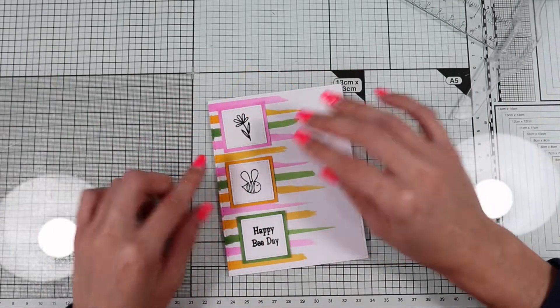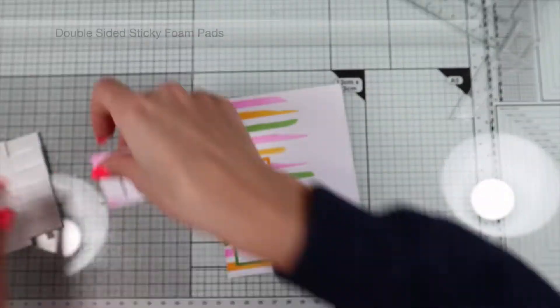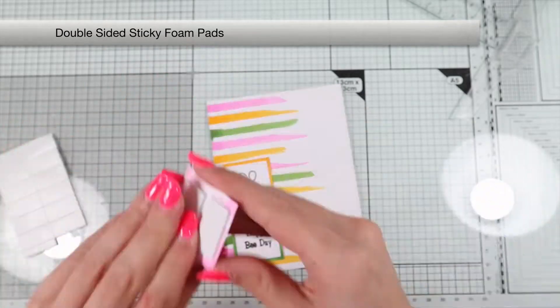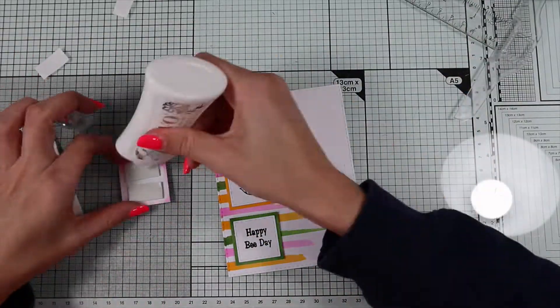I decide how to arrange the three squares and I glue them with some foam pads to give dimension to the card.